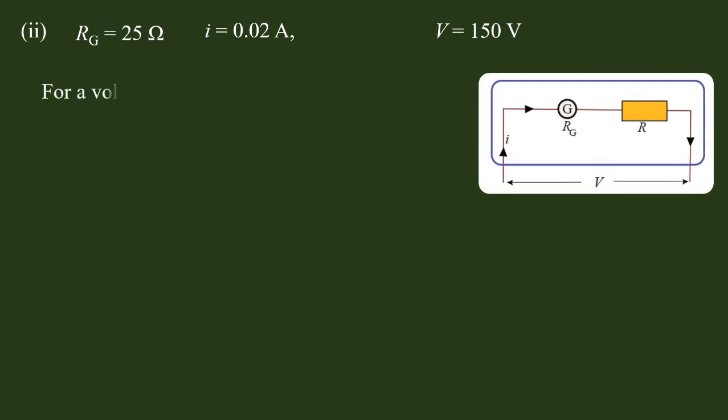We have the solution for the voltmeter part. In this series setup, the voltage V is equal to the potential difference across the galvanometer V_g plus the potential difference across the multiplier resistor V_R. The total resistance equals R_g plus the multiplier resistance R.